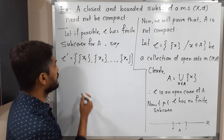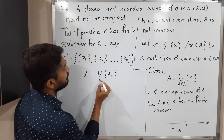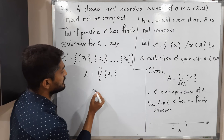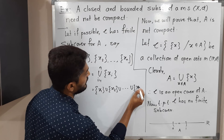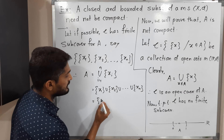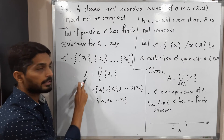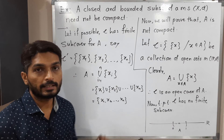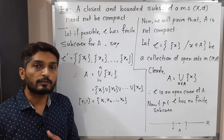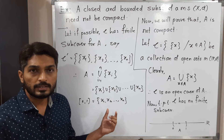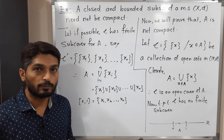Since script C′ is a subcover, it can also cover A. So A equals the union of {xᵢ} for i from 1 to n, which means A equals the set {x₁, x₂, ..., xₙ}. But the left-hand side, A, is the closed interval [0,1] which has infinitely many elements, while the right-hand side has only a finite number of elements. We are saying both sides are equal, which cannot be possible since the left side is an infinite set and the right side is a finite set.